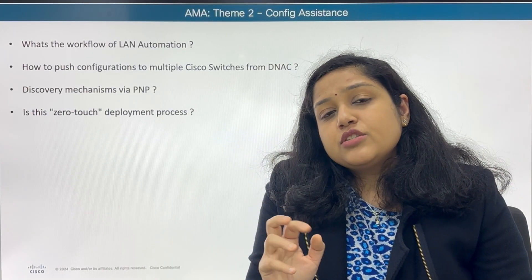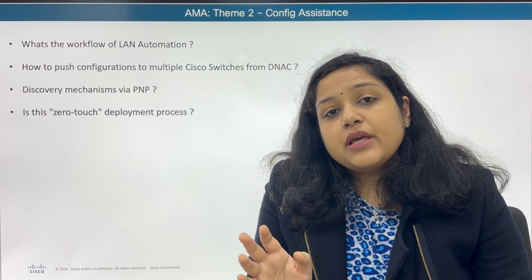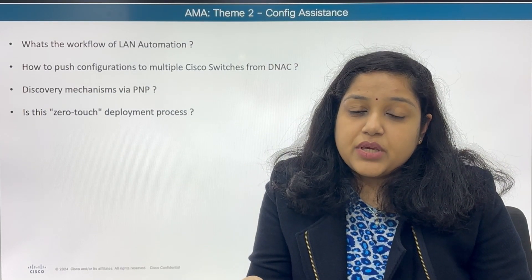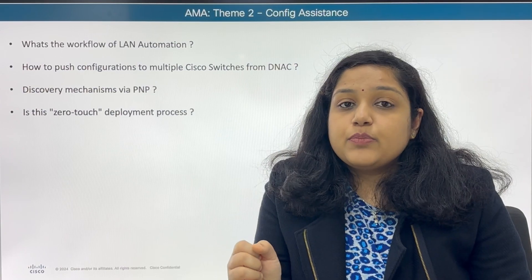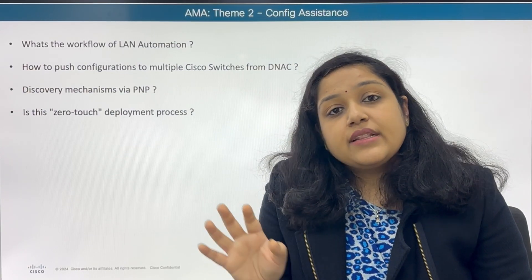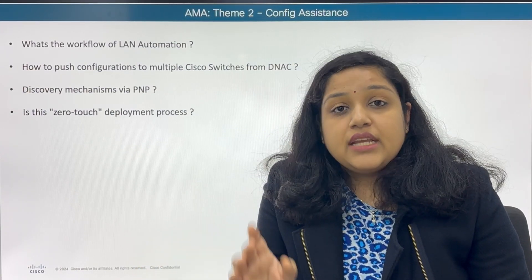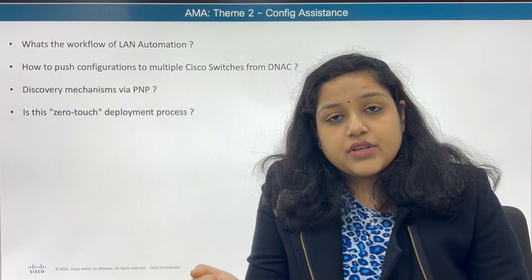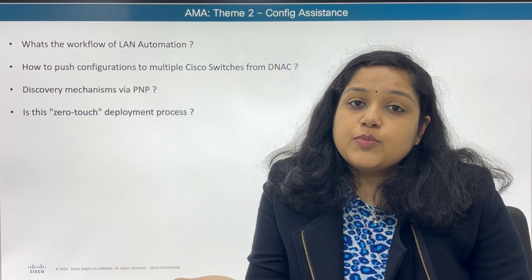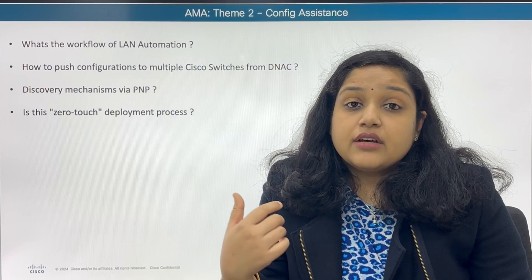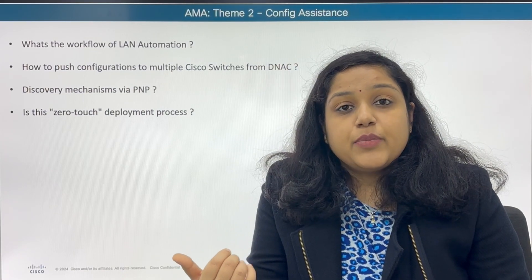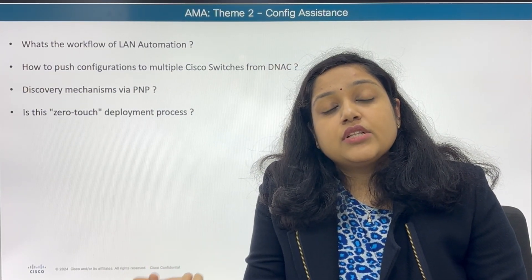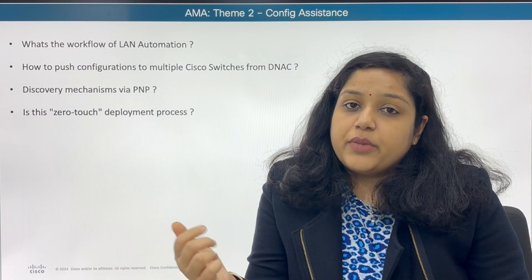What are the options for plug and play? Plug and play has three options. One is DHCP, where you configure DHCP option 43 to provide the device the IP address of the DNAC server to contact and fetch configuration. The other option is DNS server, where the device contacts DHCP to get the DNS IP, which then resolves pnp.server.domain.com.